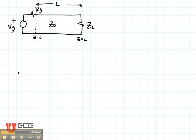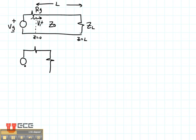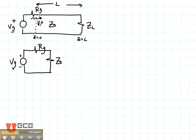We then need to consider several things. The first is how much voltage gets from the generator onto the transmission line — we're going to call that V1 plus. V1 plus is found from a voltage divider, just as V0 plus was in the continuous wave or steady state case. We have RG on our generator and Z naught here — not Z input, Z naught. So we want to find V1 plus.